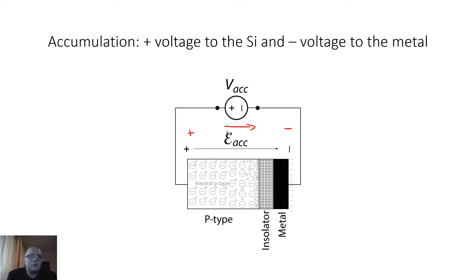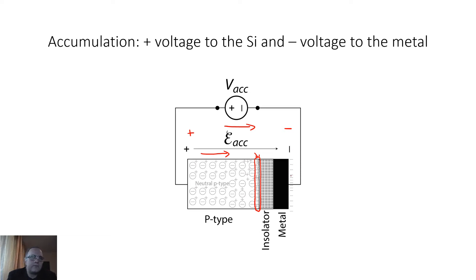The holes, which are mobile positive charges, will feel the drift force of the electric field and will move along the electric field in that direction. The positive charges — holes — will pile up at the interface between the semiconductor and the oxide, because they cannot move to the other side since they are stopped by the oxide. On the other side we'll have electrons, so the structure will resemble a parallel-plate capacitor with positive and negative charges balancing each other.